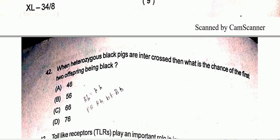Question number 42: When heterozygous black individuals are intercrossed, what is the chance of the first two offspring being black? Option B is the correct one, that is 9/16.